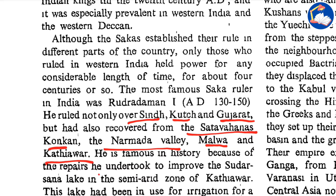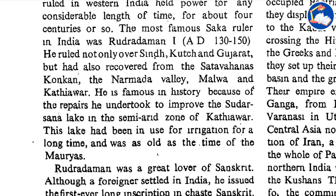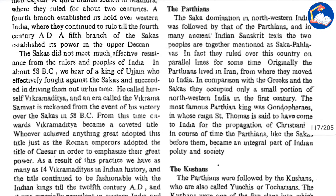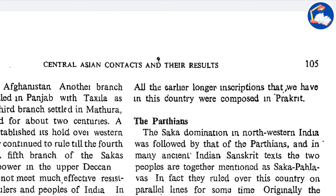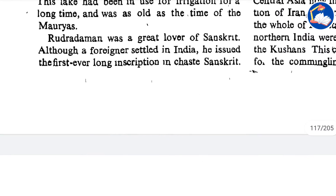Rudradaman is famous in history for the repairs he undertook to improve the Sudarshana lake in the semi-arid zone of Kathiawar. This lake had been in use for irrigation for a long time, going as far back as the time of the Mauryas. Rudradaman was a great lover of Sanskrit. Although a foreigner settled in India, he issued the first ever long inscription in chaste Sanskrit, while all the earlier long inscriptions in this country had been composed in Prakrit.